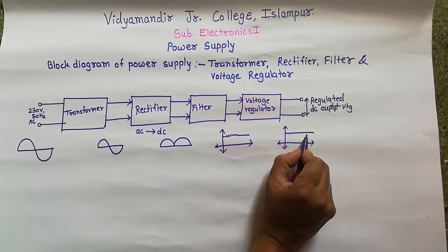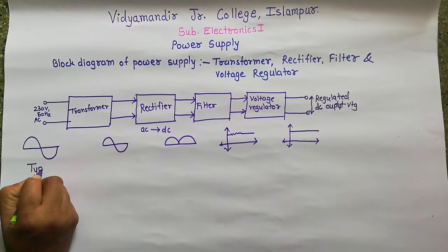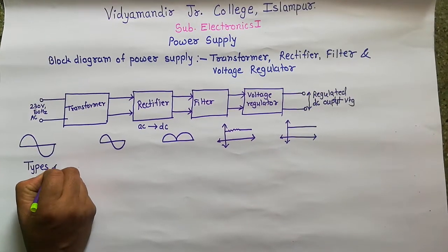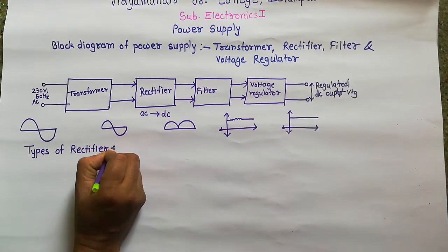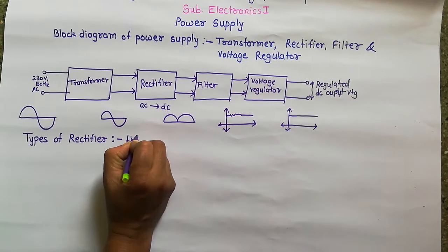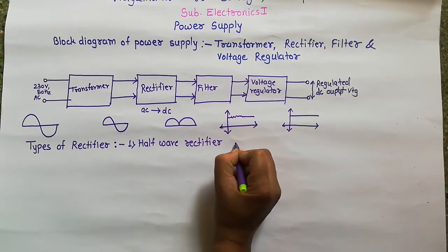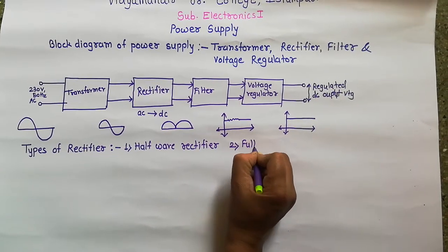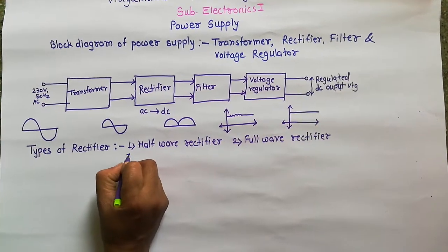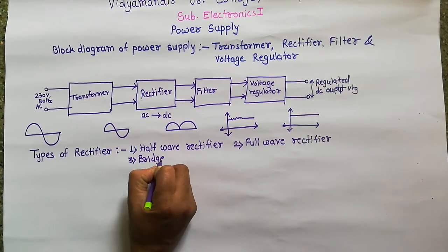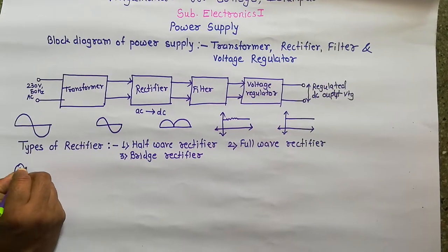At the output of the voltage regulator we get a steady and constant DC output voltage. Now we study the types of rectifier. As we studied earlier, the rectifier converts alternating quantity into direct quantity, that is AC into DC. The types of rectifier are: first, half wave rectifier; second, full wave rectifier; and third, bridge rectifier.